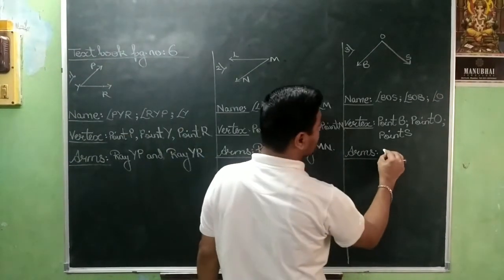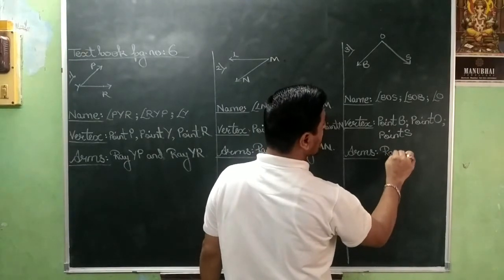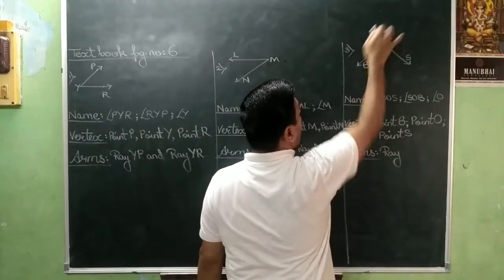And the last and the final is arm. That is, Ray O, B.